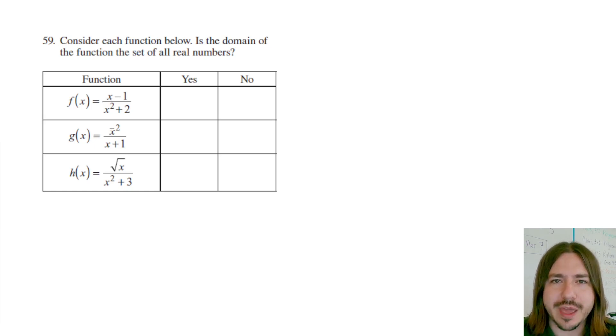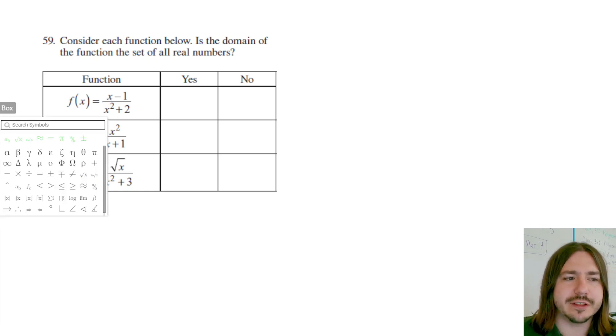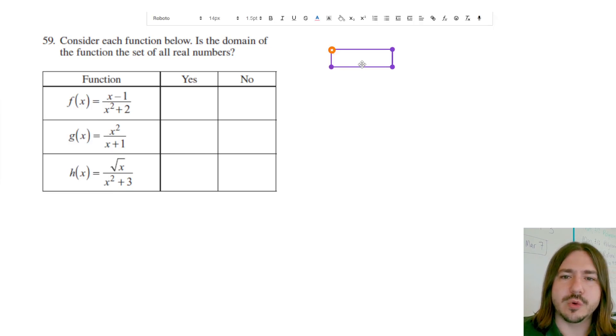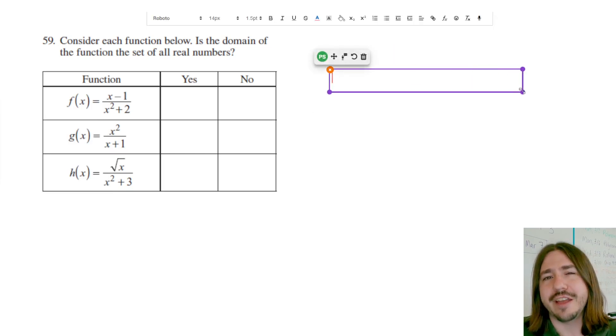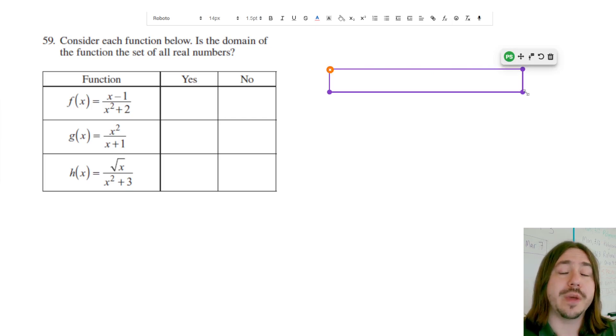But when we have these fractions, we have the potential to have a domain that doesn't include some x values because they make it undefined. When we're talking about fractions, you cannot divide by zero. So if any x value makes the denominator zero, we cannot include that x value in the domain.